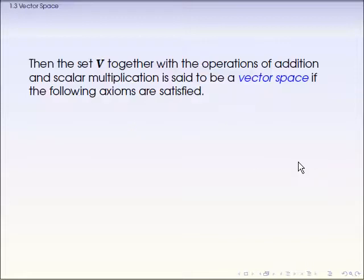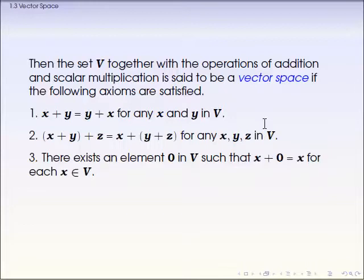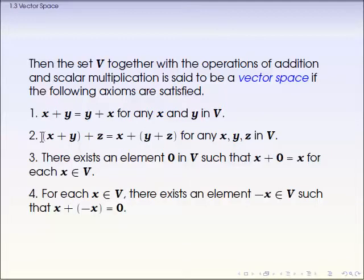So if you have those two operators with the set V, then we call that a vector space if we satisfy the following conditions. But when you look at the first four conditions, the second, third, fourth conditions actually came from the group definition. The meaning is the addition with the set V. So V is a group with one more extra condition.